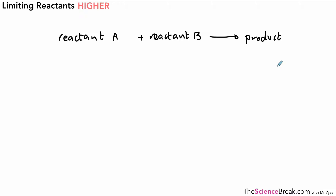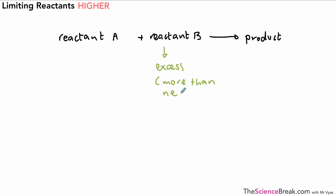Now we can describe one of the reactants as being in what we call excess. Let's imagine in this case reactant B is in excess. What does it mean to be in excess? That means there's more than we need of this reactant — more than is needed. So reactant B in this case is what we call excess.